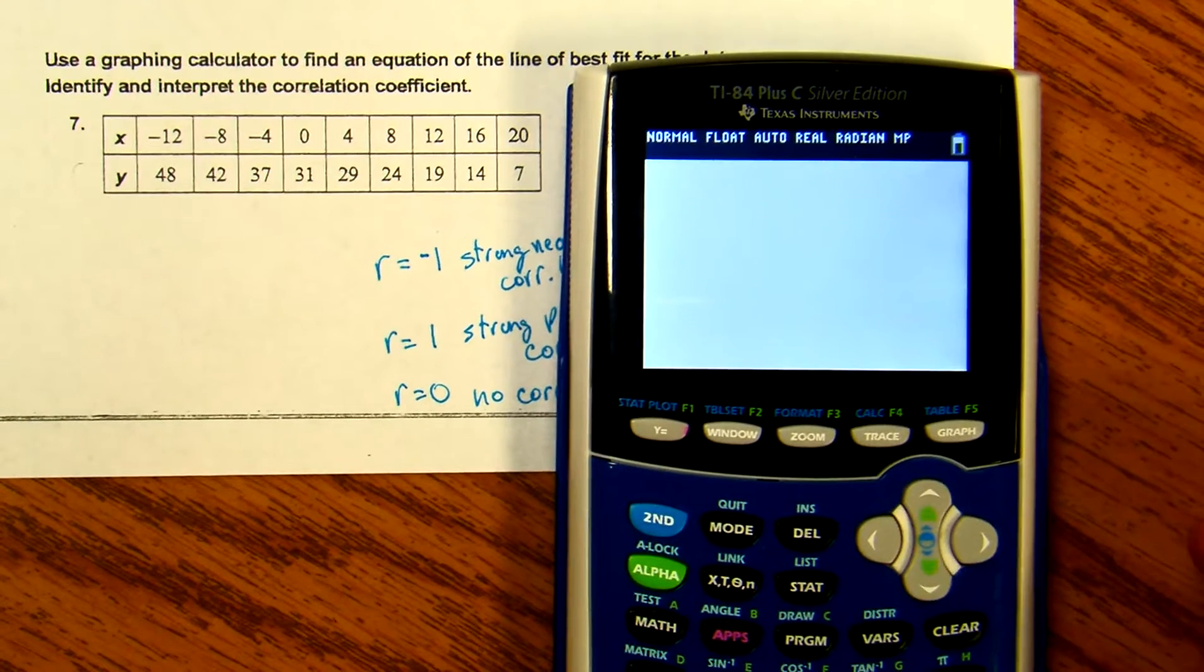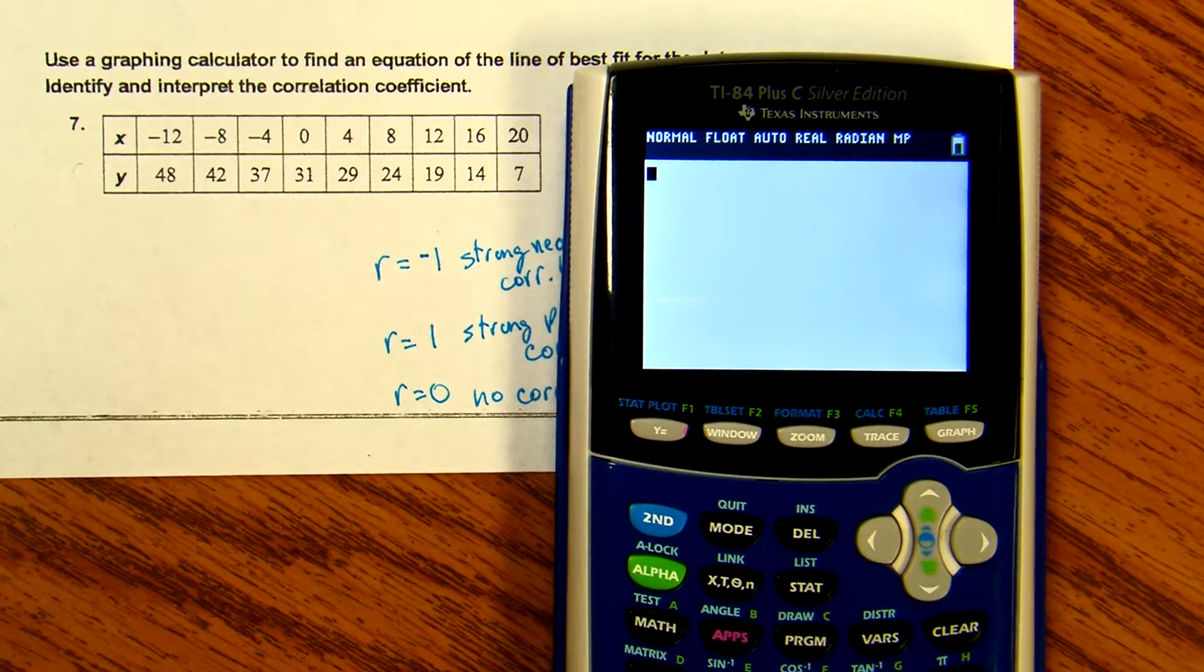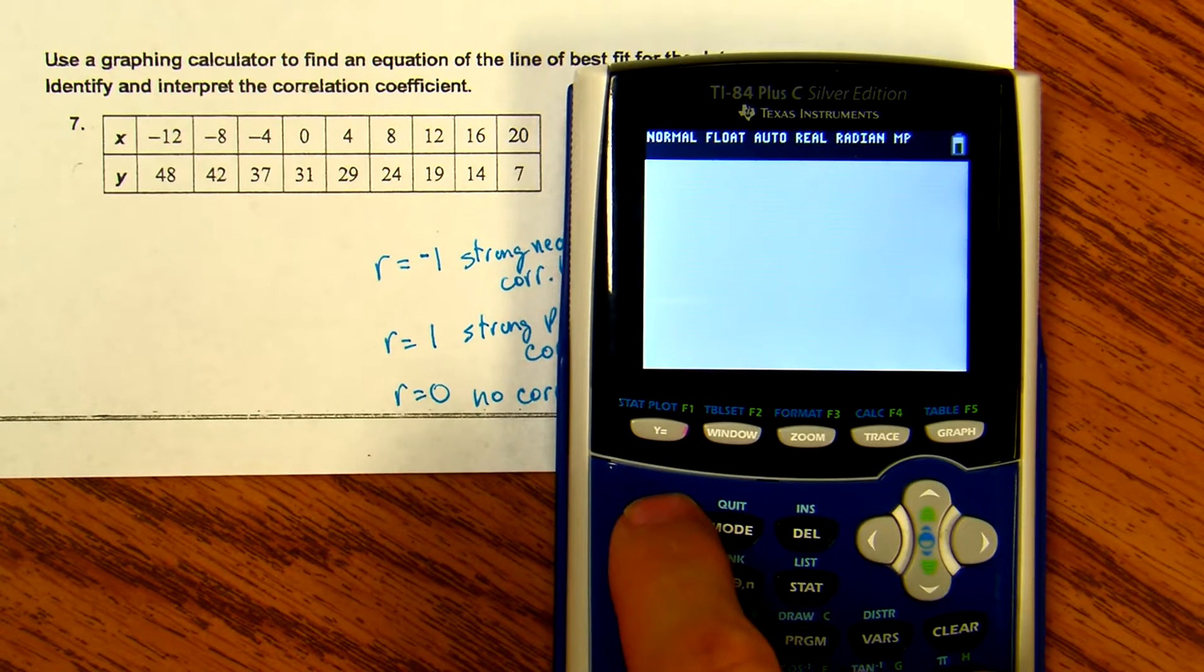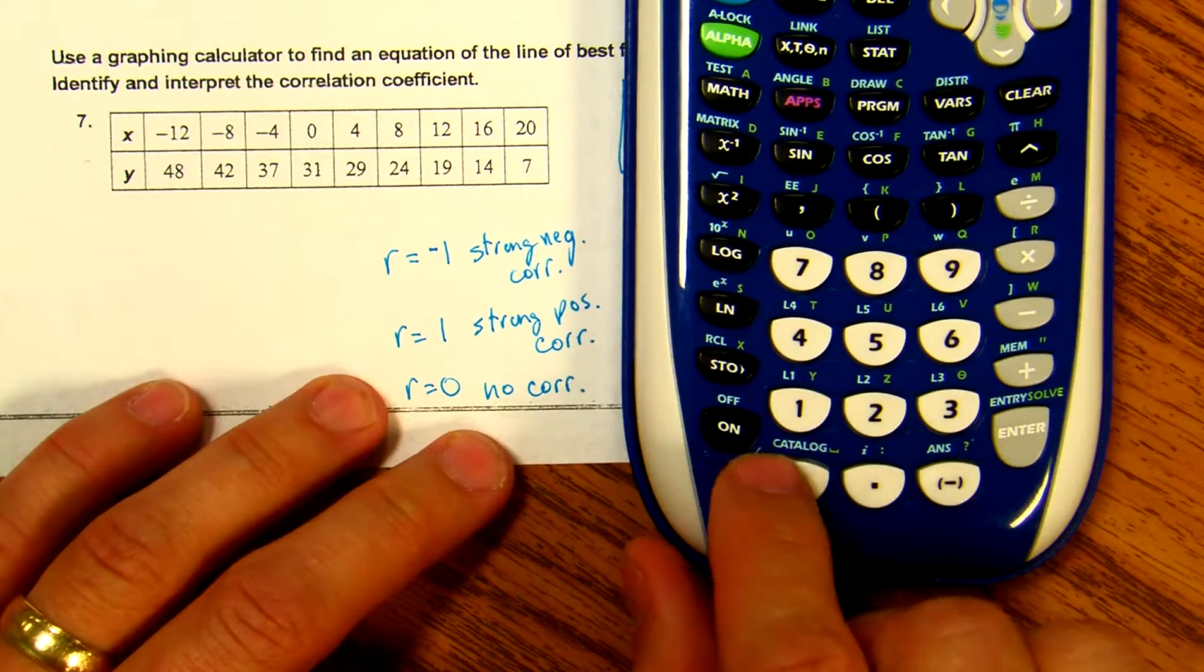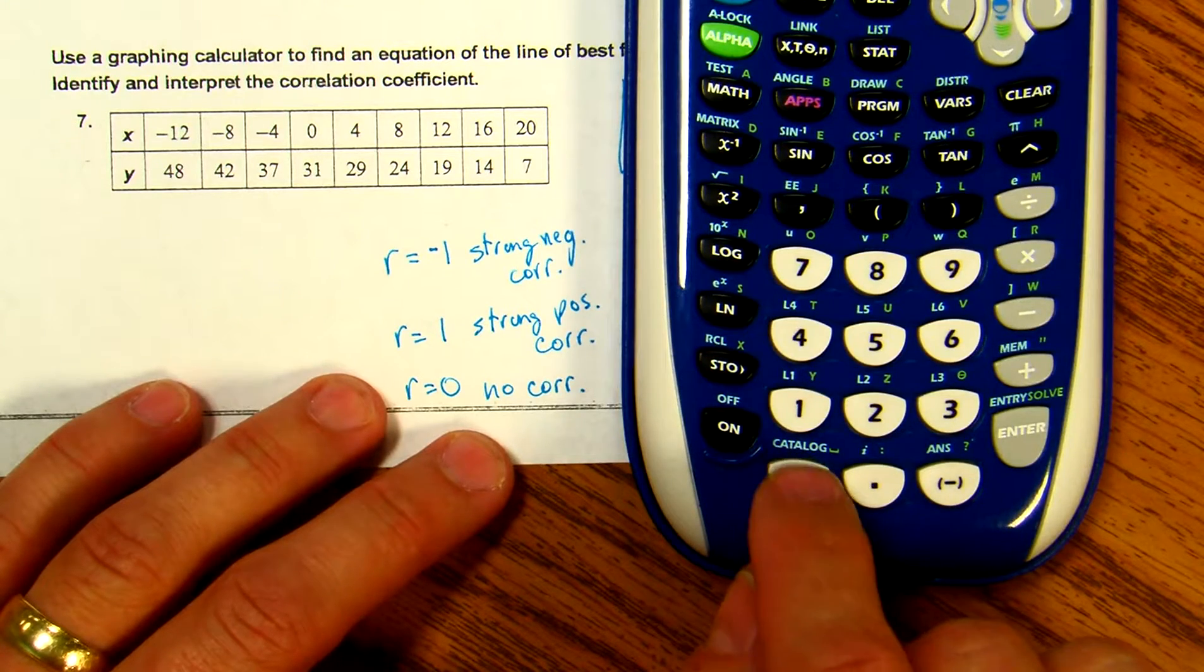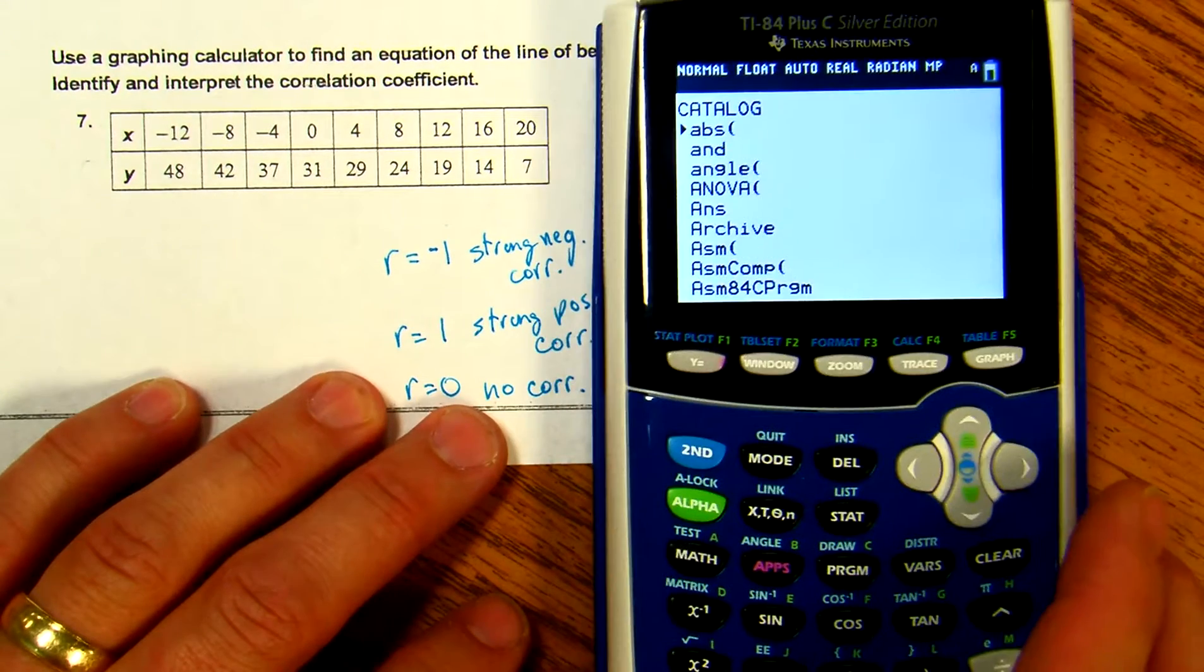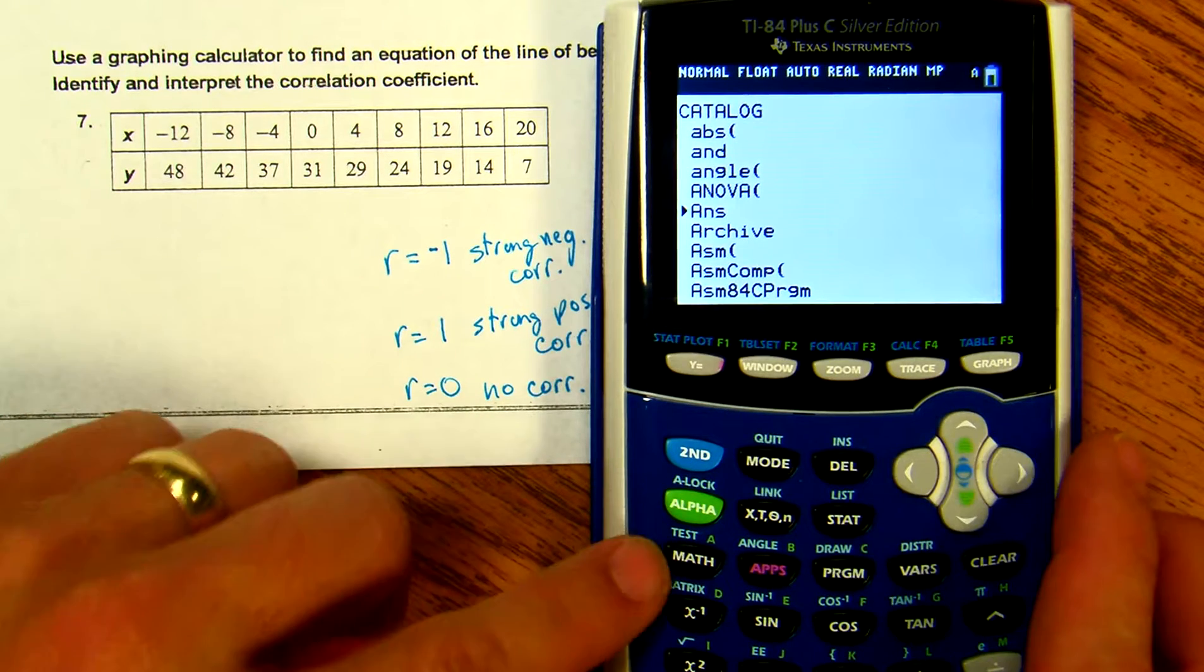Simply go to 2nd and 0 - you'll notice that says CATALOG, that's what we want. Arrow down, or if you want a shortcut, hit x to the negative one to get down to the D's.